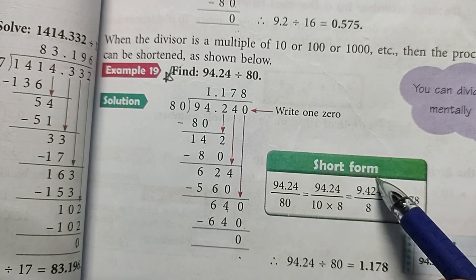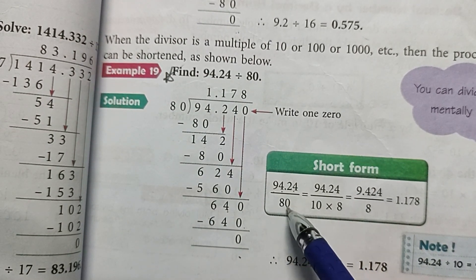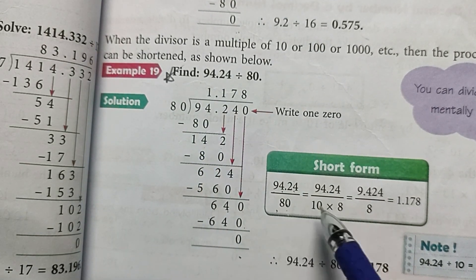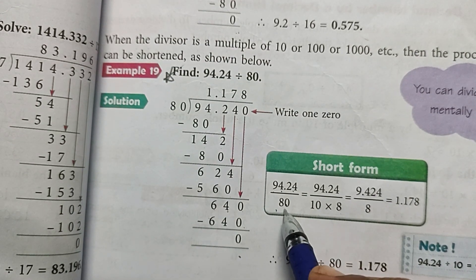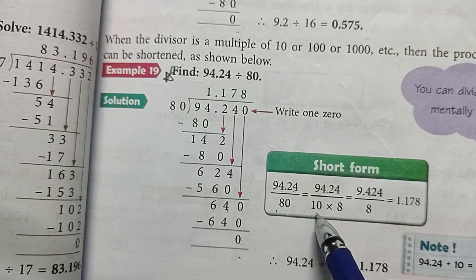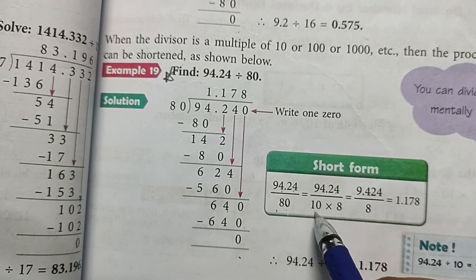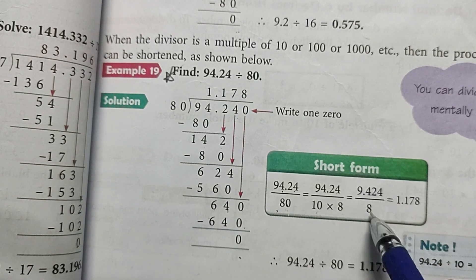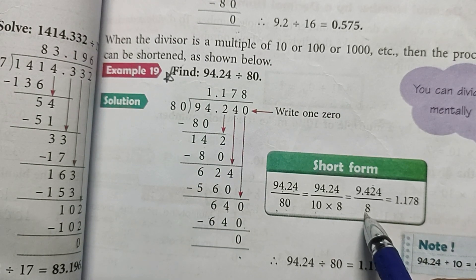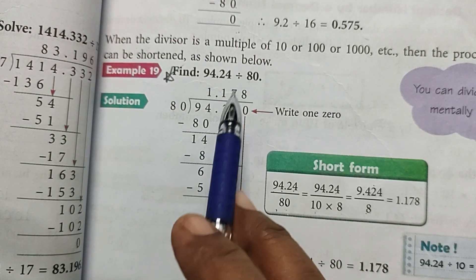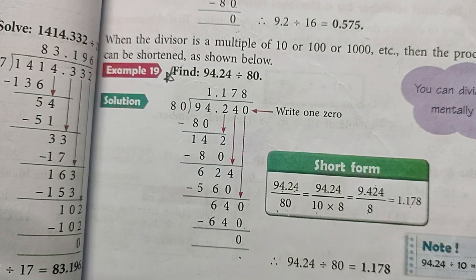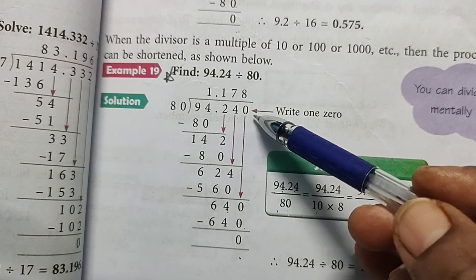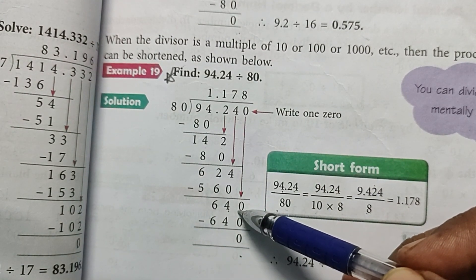Short form: 94.24 divided by 80 - we can break 80 as 8 × 10. Dividing 94.24 by 10 shifts the decimal one place left to get 9.424, then divide 9.424 by 8, which is easier. The answer will be the same in both methods. Use the short form only if specifically mentioned; otherwise use the standard long division method.